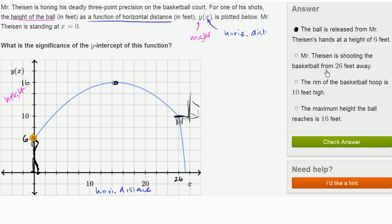Mr. Theusson is shooting the basketball from 26 feet away. Well, that's right. He's at x equals 0. The goal is at 26 feet away. But that's not the significance of the y-intercept. That'd be the significance of where we saw this little point here that started to where the ball dropped down at a steeper angle.